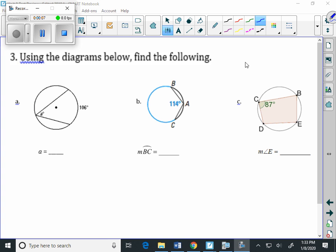It is an inscribed angle. The rule for an inscribed angle is that the measure of the inscribed angle is half the measure of the intercepted arc.